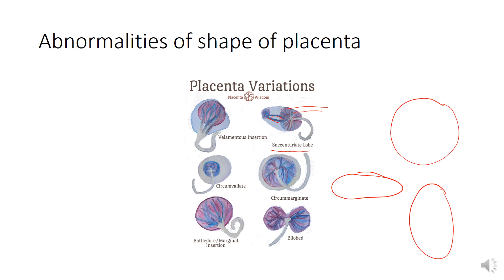Normally the umbilical cord is attached near the center of the placenta. Sometimes the cord is attached to the edge of the placenta — this is called battledore placenta (marginal insertion). Rarely, the umbilical cord is attached to the membranes at some distance from the margin of the placenta, with umbilical vessels running along the membrane before reaching the placenta; this condition is called filamentous insertion of the umbilical cord, and the placenta is called placenta filamentosa.